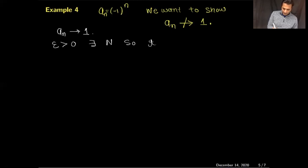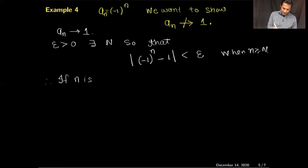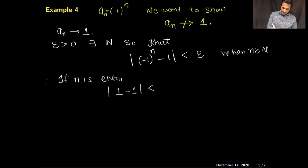If n is even, then (−1)^n = 1, so |1 − 1| = 0 < ε, which is true. But if n is odd, then (−1)^n = −1, so |−1 − 1| = |−2| = 2. This gives 2 < ε, meaning the result only holds if ε > 2.